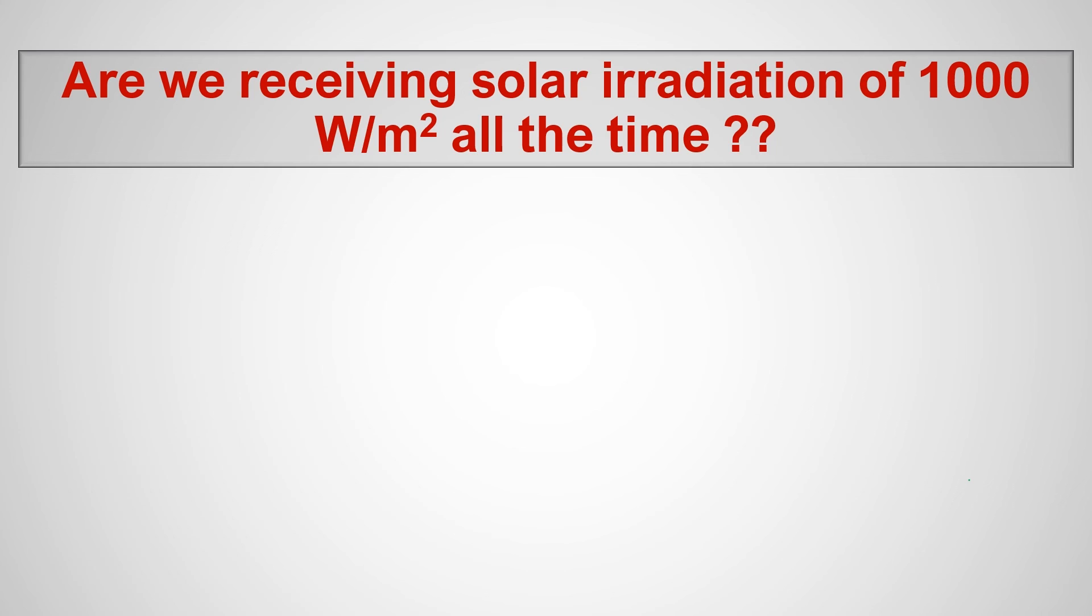So now another question, are we receiving 1000 watts per meter square all the time? No, we are not receiving the solar radiation of 1000 watts per meter square. Again because of solar radiation we are not receiving 1000 watts per meter square, the panel output will reduce. When the solar radiation reduces, panel output will reduce.